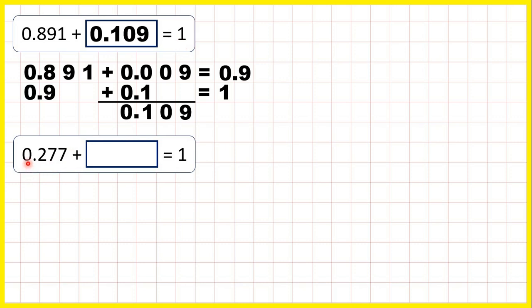Now, we start with 0.277. If we add 0.003, so 3 thousandths, that gives us 0.280, just as 277 plus 3 equals 280.